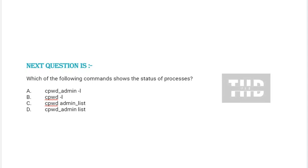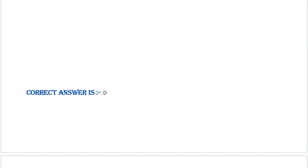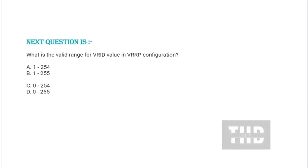Next question: Which of the following commands shows the status of processors? See the options — option A, B, C, and option D. Correct answer is option D.